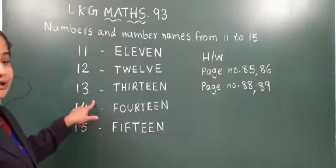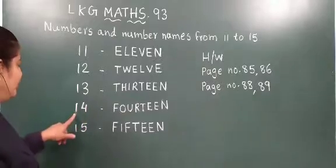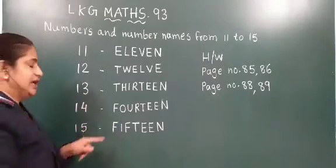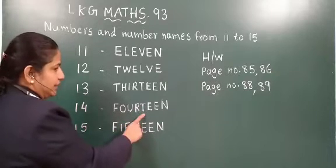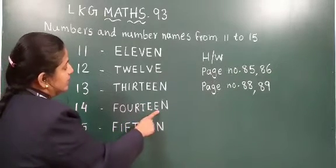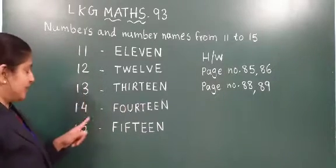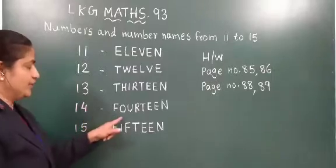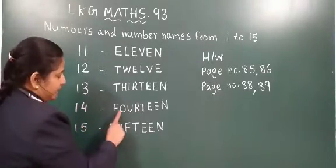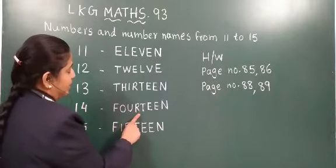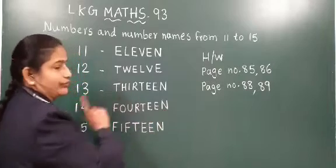Now thirteen ke baad konsa number ae ga? Fourteen — F, O, U, R, T, E, E, N. Thirteen ke baad konsa number ae ga? Fourteen. Now number names — spellings once more: F, O, U, R, T, E, E, N. Fourteen.